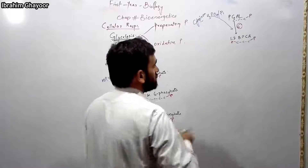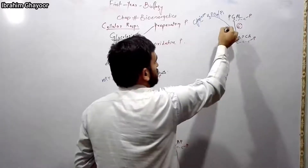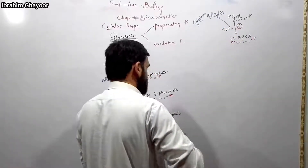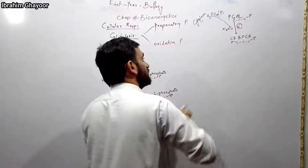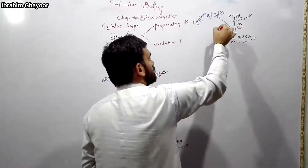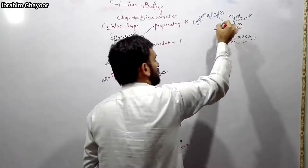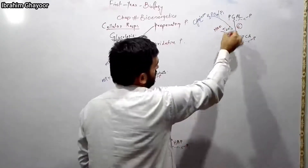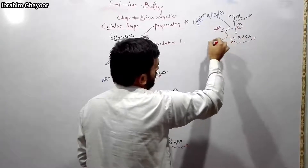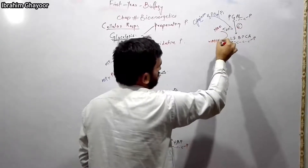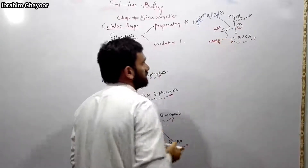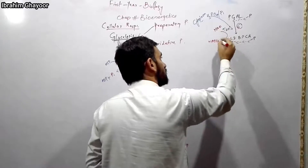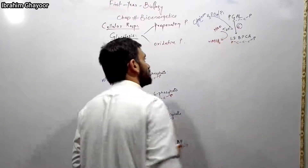Two hydrogen atoms are removed from PGAL. These hydrogens combine with NAD to form NADH2. NAD is reduced to NADH2. This is the dehydrogenation reaction of the oxidative phase.